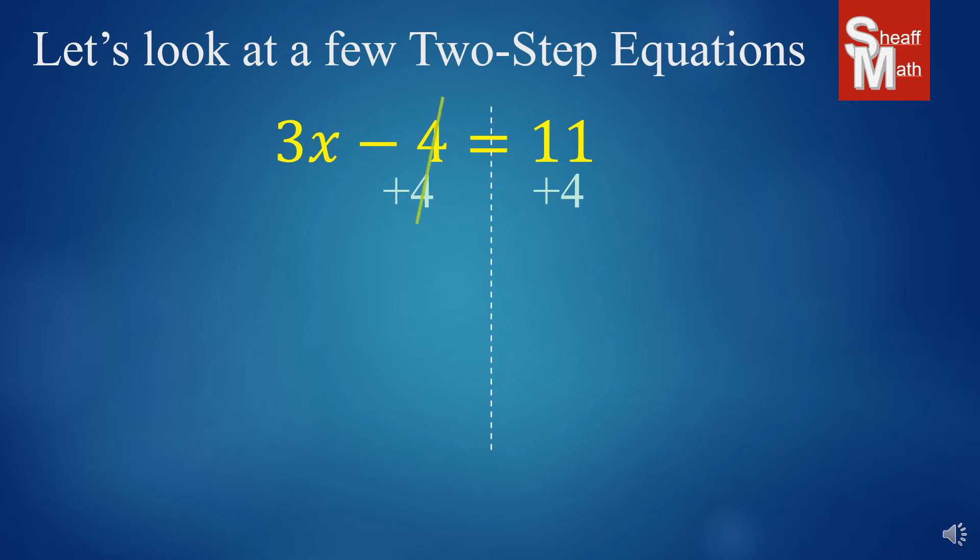That negative 4 cancels out, and we are left with 3x equals 15. Then, we have a 3 multiplying x. To undo that multiplying 3, we divide by 3 on both sides. That cancels out our 3, and we end up with x equals 5. Not too bad. We're going to keep doing a few more.